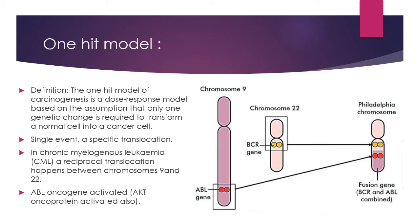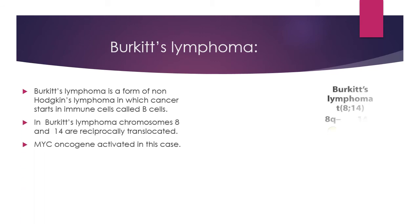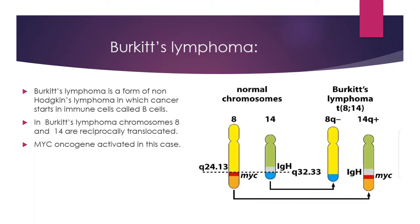In the Philadelphia chromosome, both BCR and ABL genes are combined, forming this cancer-causing agent which causes chronic myelogenous leukemia. This specific translocation between the two chromosomes is the best example of the one-hit model.